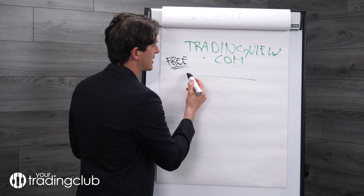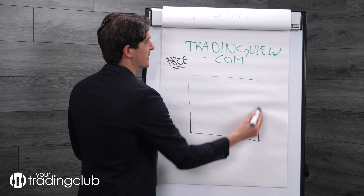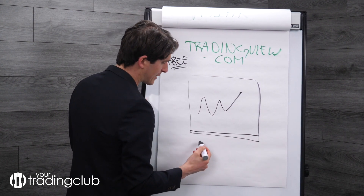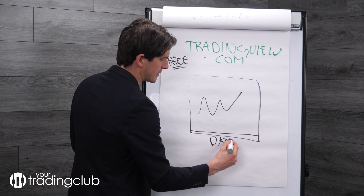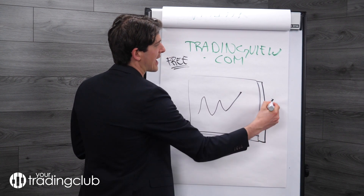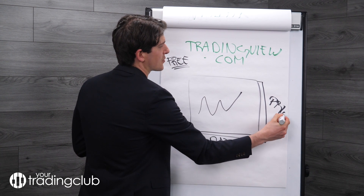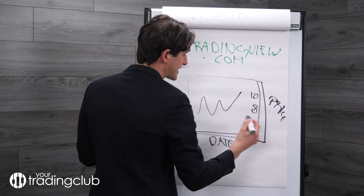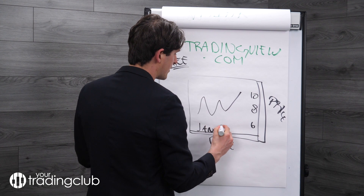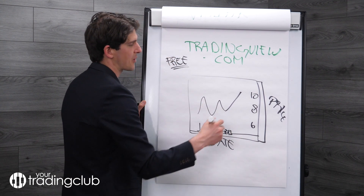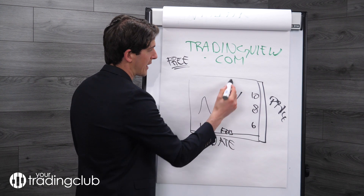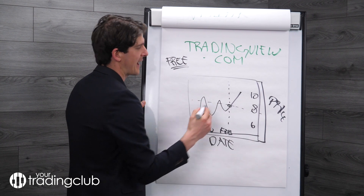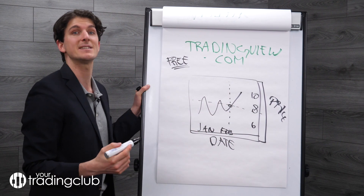It's going to look like a square. In the middle you will have the graph, and down here you will have the timeline — so you will have all the dates. On this side you will have the price, so maybe it says ten dollars, eight, six, etc. Here it's January, February, etc. And then you will have the price moving. When you hover on any particular point and these intersect, that's where you get the price on a specific date.